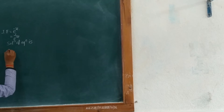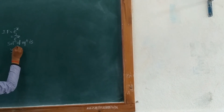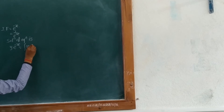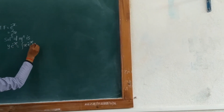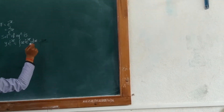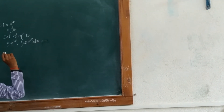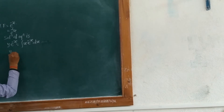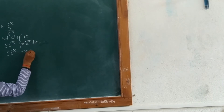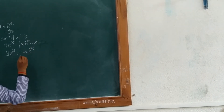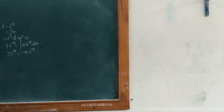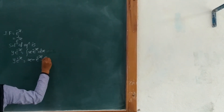We solve the integral of x times e raised to minus x using integration by parts. This gives minus x times e raised to minus x minus e raised to minus x, since the derivative of x with respect to x is 1. Therefore the integral of x times e raised to minus x equals minus x times e raised to minus x minus e raised to minus x plus c.